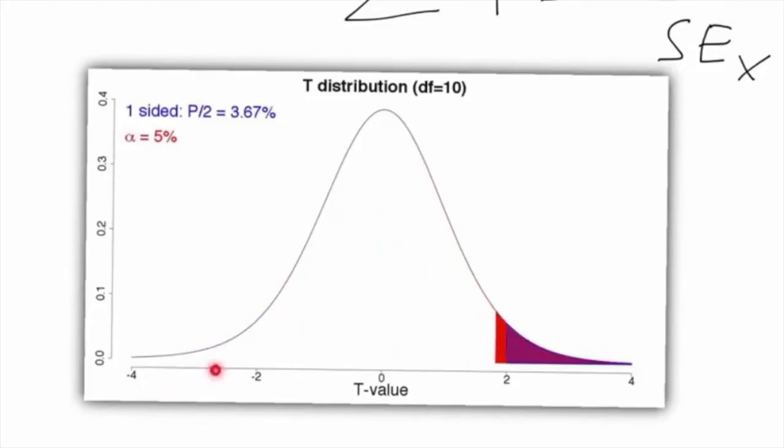By dividing the original two-sided p-value by 2, only 3.67% remains on the right side, this blue surface.